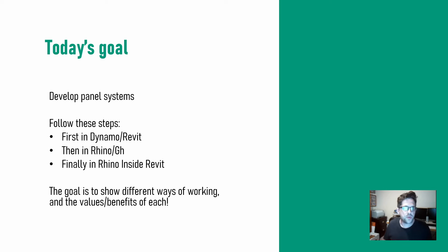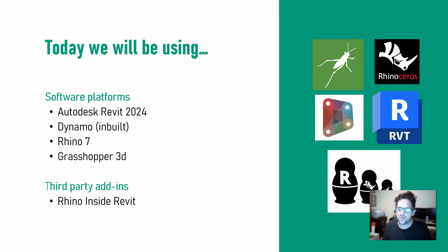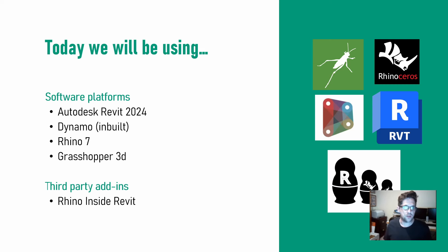These platforms are very different to each other and they go very well together. The point I'll show is that you can create a very simple solution in Dynamo with maybe some limitations, but you can also create a complex solution in Rhino Inside Revit — though it's going to be harder for the user to create and pilot. Today I'll be in Revit 2024 and Rhino 7, using the inbuilt versions of Dynamo and Grasshopper, and Rhino Inside Revit which you can download from the Rhino Inside Revit website.